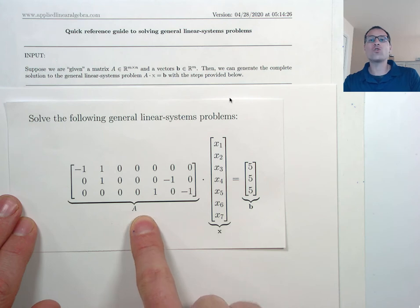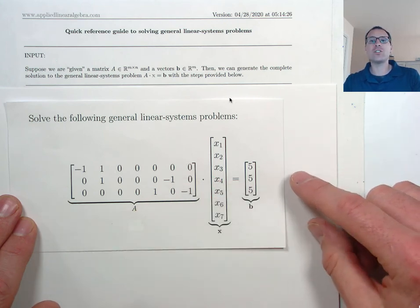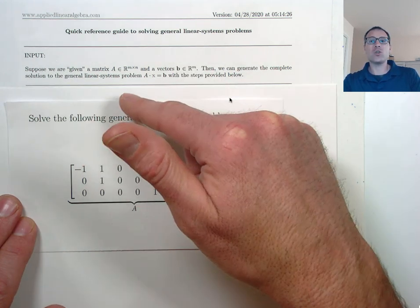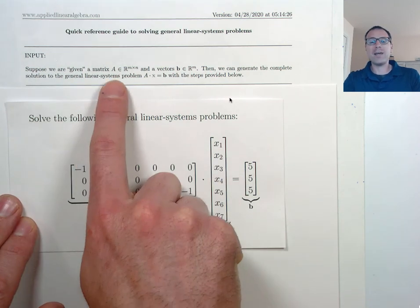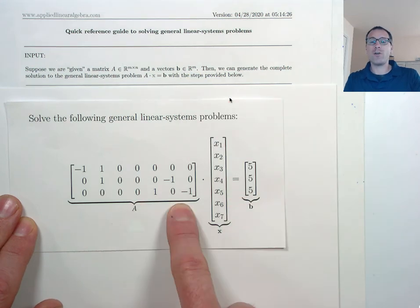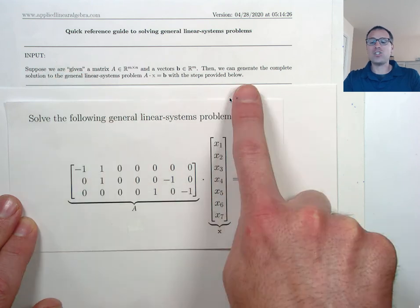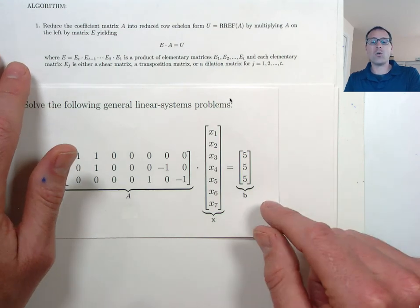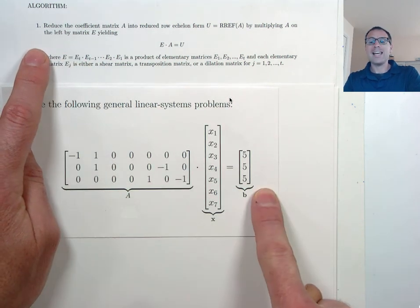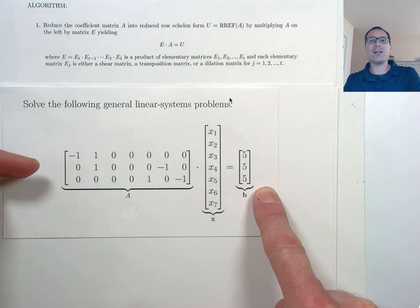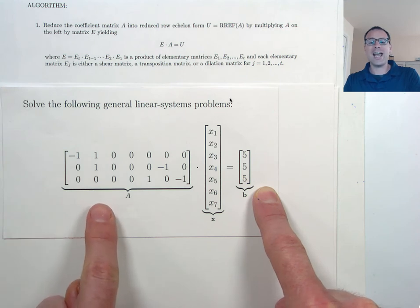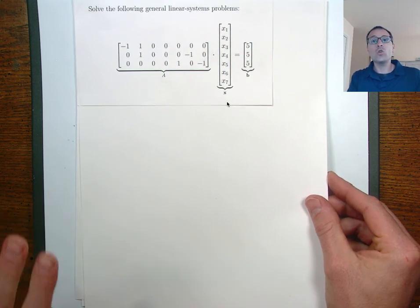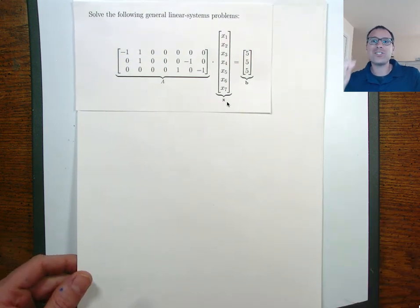This isn't quite the form we need to apply the techniques we've learned. With that in mind, we'll look through a quick reference guide for solving general linear systems problems. This algorithm starts with a given matrix A and a given right-hand side vector B — exactly what we've derived from this applied context. What we want is to generate the complete solution X that solves AX = B using a three-step algorithm. The first step is to reduce the original system AX = B into special form — RREF — by multiplying by a sequence of elementary matrices on the left-hand side. I did that transformation before this video started.